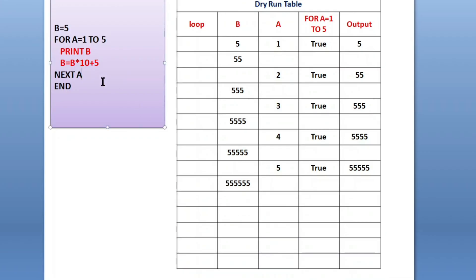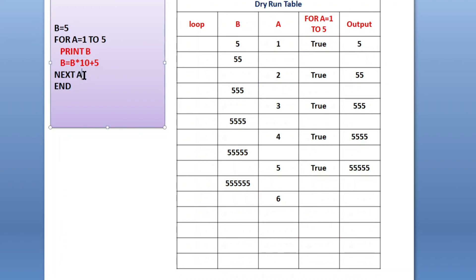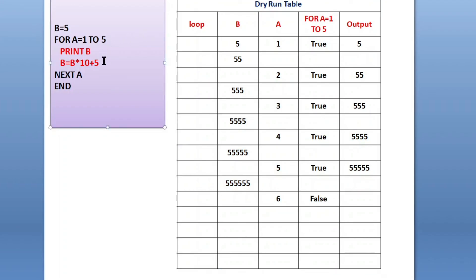Next a: increment the value of a by 1 — before it is 5, now it will be 6. It will check the condition again. In the loop it checks whether a is in the range of 1 to 5. This time it is 6, so it is false. When the loop condition is false, it goes just after next a — end of the program. The output is: 5, 55, 555, 5555, 55555.